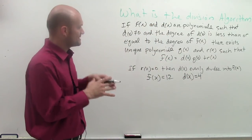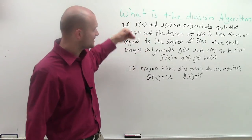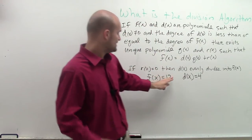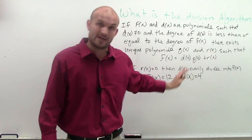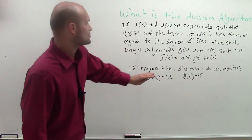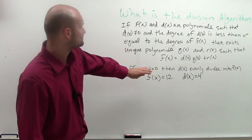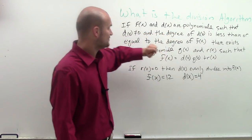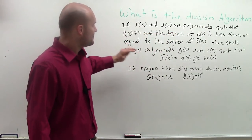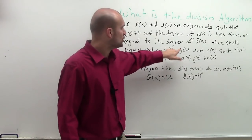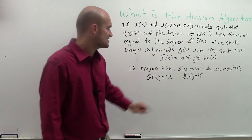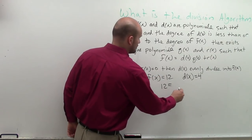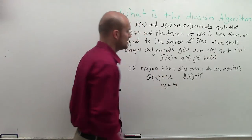So what they're saying is, as long as d of x has a less than or equal degree — so if it's like x squared, or x, or these both have a degree of x to the 0 because they're constants — d of x has to either have less than or the exact same degree. There exists a unique polynomial q of x and r of x, such that f of x, so 12, equals 4 times some number.